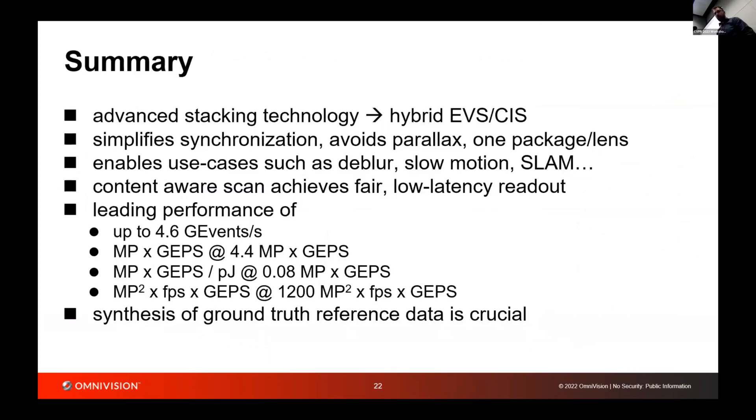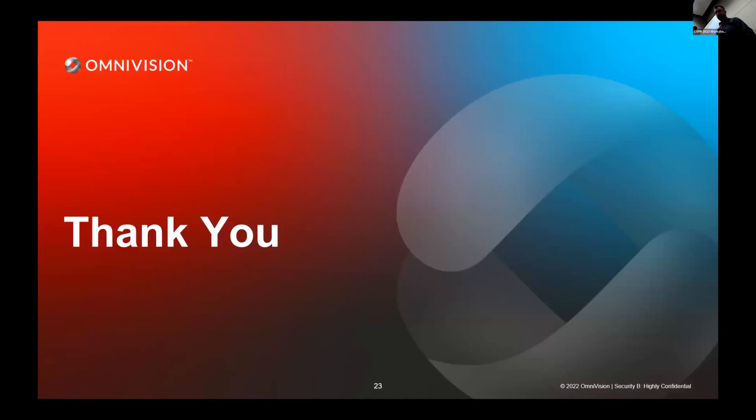In summary, we use advanced stacking technology to realize hybrid EVS-CIS sensors. Using a hybrid sensor avoids synchronization issues, avoids parallax. We need only one lens, one package, so we basically reduce cost. We do look at several use cases, such as D-blur, slow motion, SLAM could be interesting in the future. We employ low-latency readout that is scene-driven, so basically we skip over rows or columns that don't have events. We achieve decent performance in noise, readout, and power. I want to point out here that, again, a synthesis of realistic ground-truth data is important, which is why we work on simulators as well. Thank you.